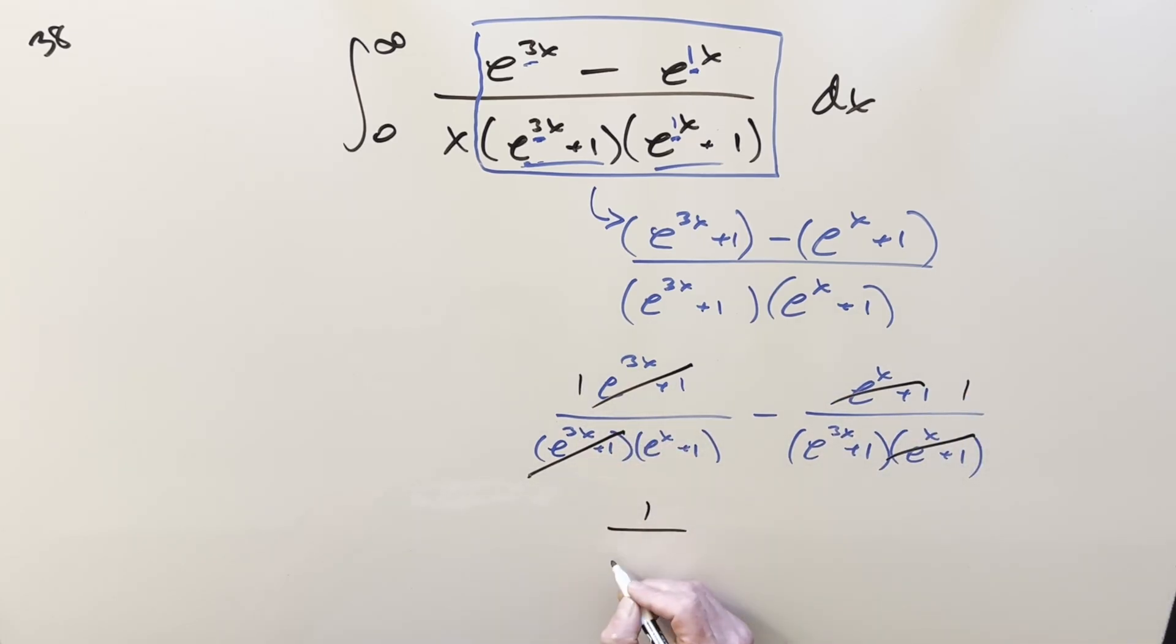So what we're left with is going to be one over e to the x plus 1 minus one over e to the 3x plus 1.